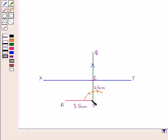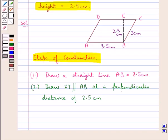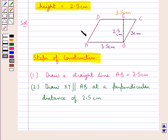Now since we know that in a parallelogram opposite sides are equal, this means if AB is equal to 3.5 cm, then CD would also be equal to 3.5 cm. And if BC is 3 cm, then AD would be 3 cm.